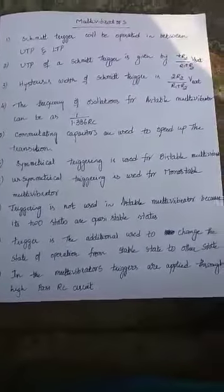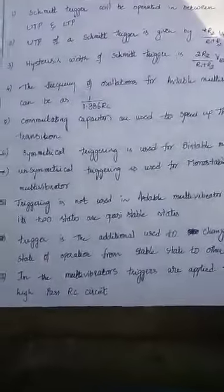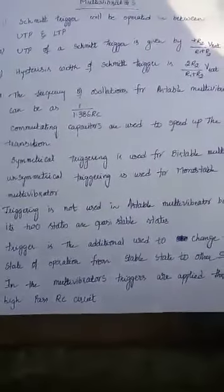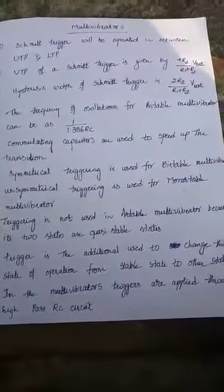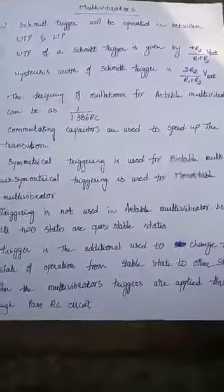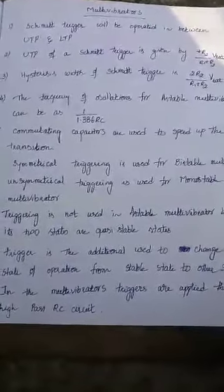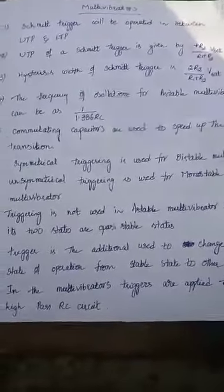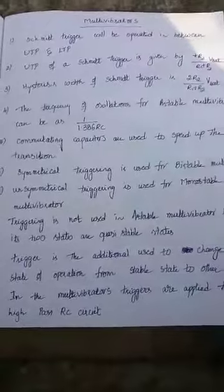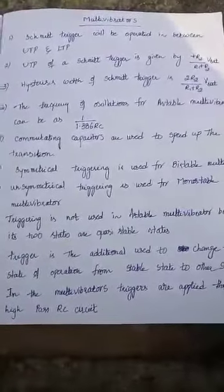The next bit is on triggering. There are two types of triggering: symmetrical triggering and unsymmetrical triggering. Symmetrical triggering is used for a bistable multivibrator, since it has two stable states and two triggers are required. For a monostable multivibrator, unsymmetrical triggering is required since it has only one stable state — the other state is a quasi-stable state. We need not apply any trigger signal during the quasi-stable state; after 0.693 RC seconds the monostable multivibrator automatically returns to the stable state. For an astable multivibrator, no trigger is required because both states are quasi-stable states.